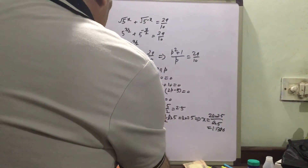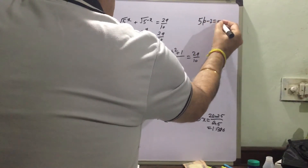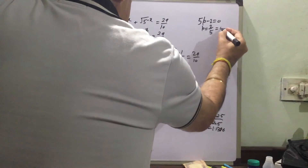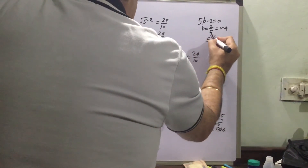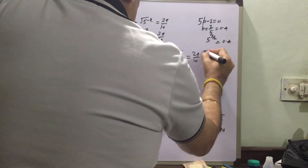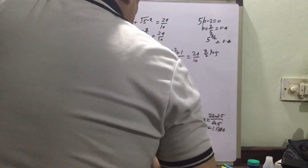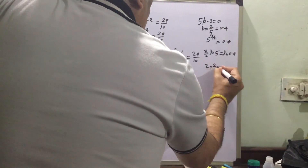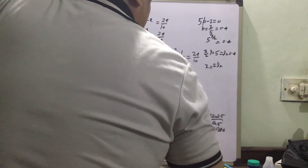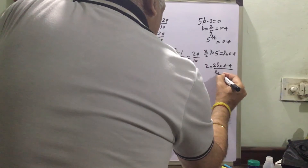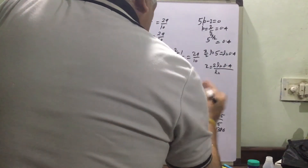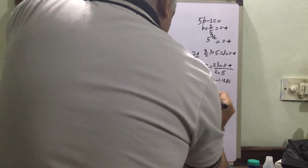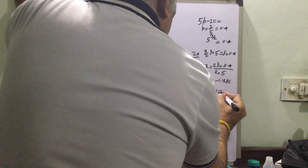So we have got x approximately equal to 1.1386. The other solution is 5p minus 2 equal to 0, giving p equal to 2 by 5, which is 0.4. So we write 5 raised to the power x/2 equal to 0.4. Then x/2 times log 5 equals log 0.4, so x equals 2·log(0.4) divided by log 5. So we have got x equal to minus 1.1386.